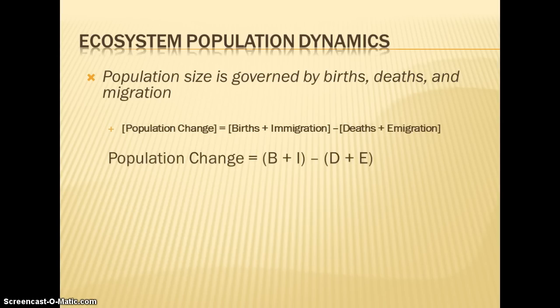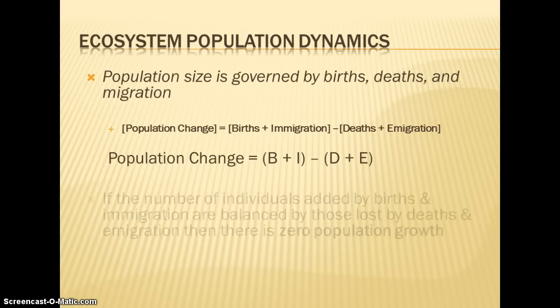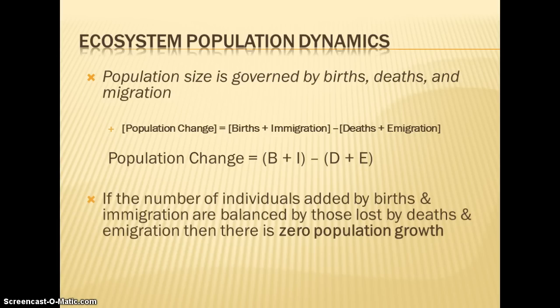We have a formula for that: population change equals B plus I — births and immigration — so that's how you're adding individuals to the population, minus D plus E — death plus emigration — so that's dying and moving out. If those are equal, the number of individuals added is balanced by those taken away, and you'll experience zero population growth.